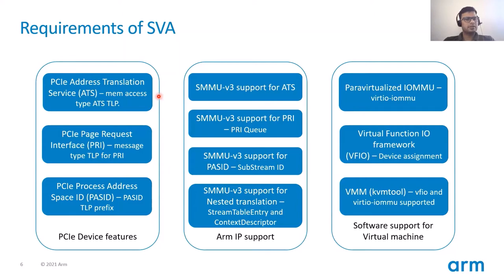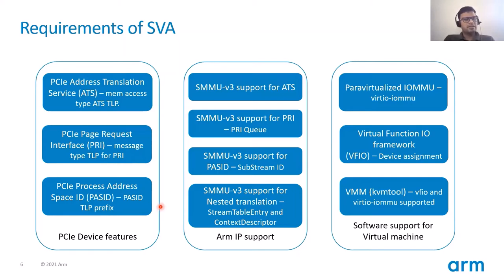ATS is a memory access type TLP packet that can be initiated by a PCI device, and it allows the device to request address translation prior to initiating a DMA. The Page Request Interface (PRI) allows the device to request IO page fault handling — whenever an address translation fails as part of an ATS request, the device can initiate a TLP packet for PRI and the translating agent will try to serve this request. The Process Address Space Identifier is an additional ID emitted by the PCI device in addition to the requester ID, and it helps the SMMU identify various translation tables for devices assigned to virtual machines.